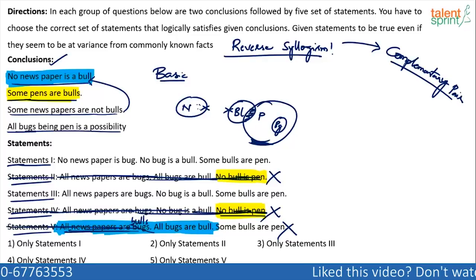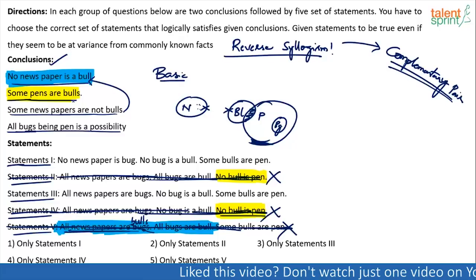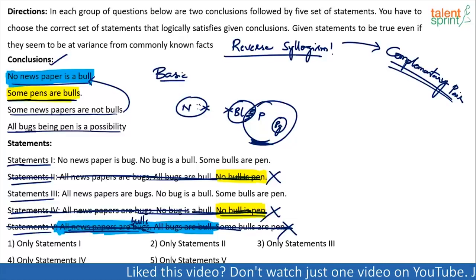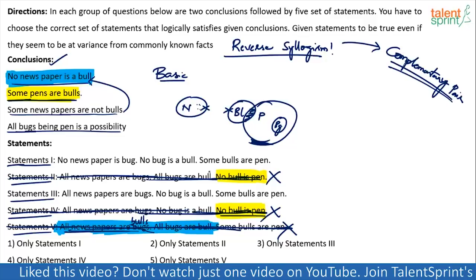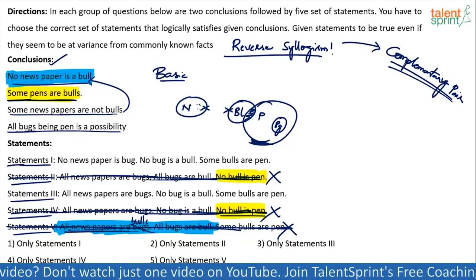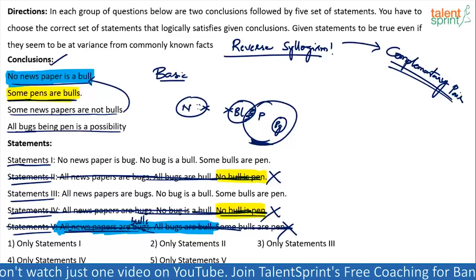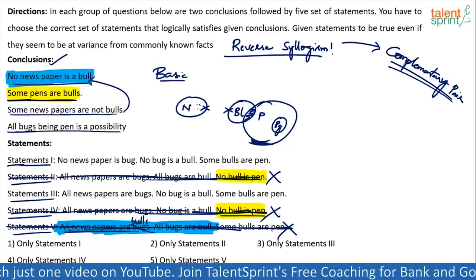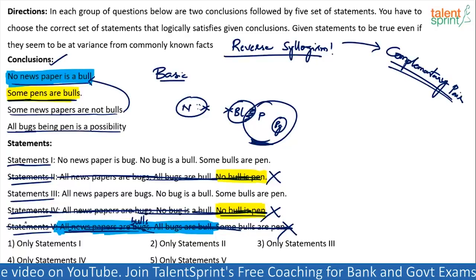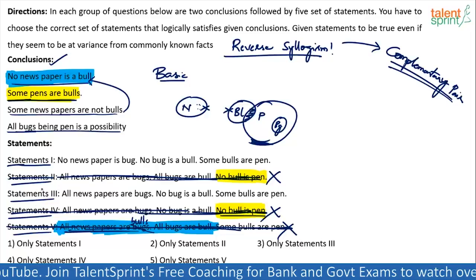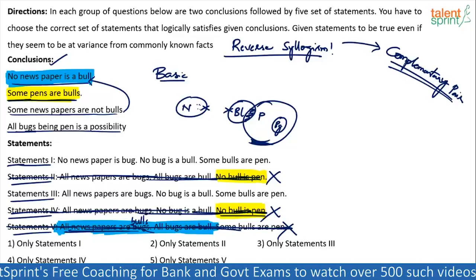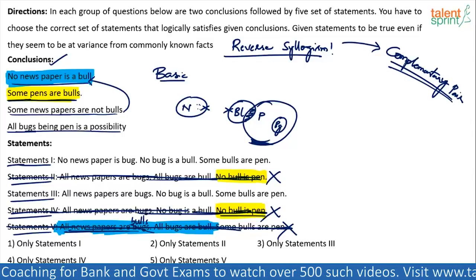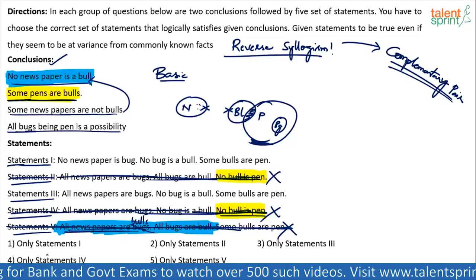So five also gets eliminated. The advantage of using complementary pairs: when I know 'some pens are bulls,' 'no bull is a pen' has to be wrong — so wherever we have 'no bull is a pen,' we eliminate. Similarly, when I know 'no newspaper is a bull,' 'all newspapers are bull' is wrong. So sets two, four, and five got eliminated. Now only two statements are left: the first and the third. Let's see if we can smartly eliminate even these.